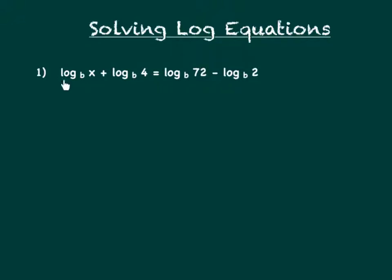Remember that if you have two log terms separated by an addition sign, what we can do is condense those into one single log term — log to the base b of the product of what's here and what's here. So x times 4 would be 4x.